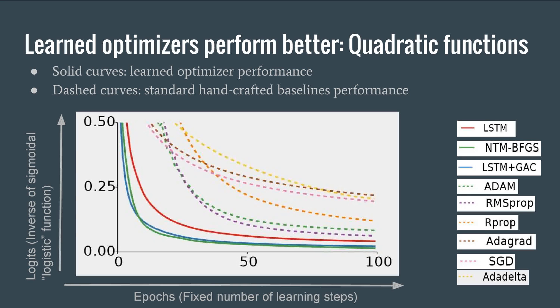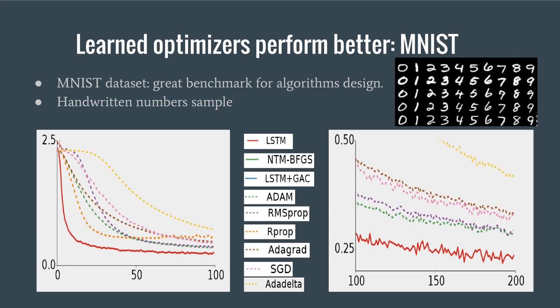Now let's evaluate the paper. The authors use synthetic matrices of size 10 by 10 drawn from random numbers from a Gaussian distribution and a quadratic function which has to be minimized. The learned algorithm, represented by solid lines, performs better as shown.